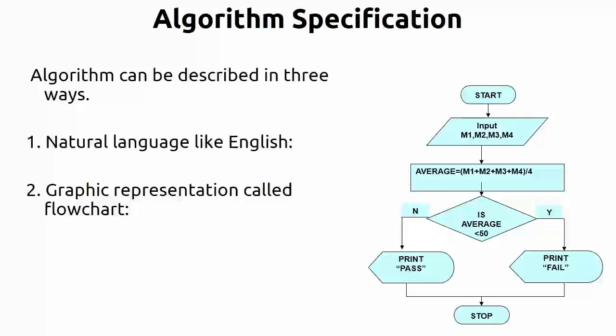These two methods — natural language and flowchart — are not feasible for complex problems, like finding the shortest distance between a number of cities or finding the shortest weight among all weights. So we move to the third method.